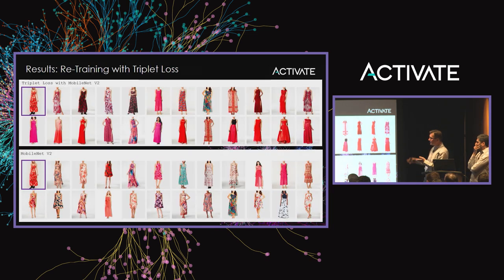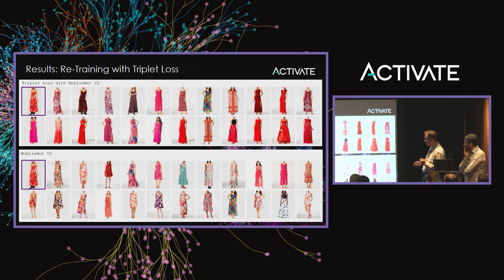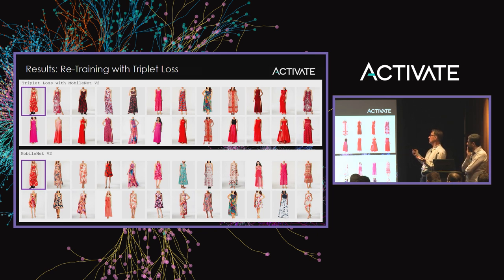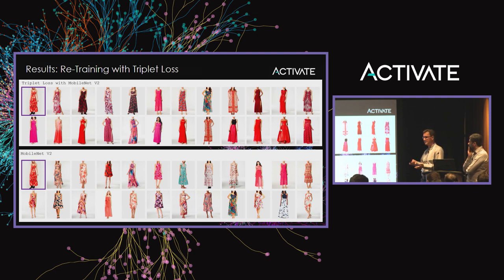Results with retraining using triplet loss: comparing the baseline MobileNet (shown before) versus the improved version — it's a clear improvement, especially color-wise. Color actually turns out to be very hard. It's almost like a trade-off, some kind of metaphysics between shape and color.